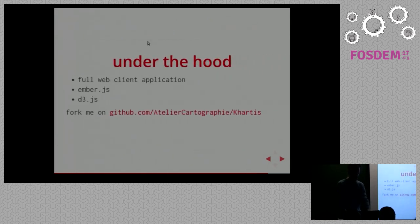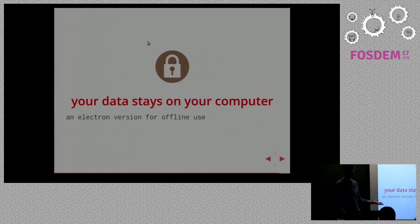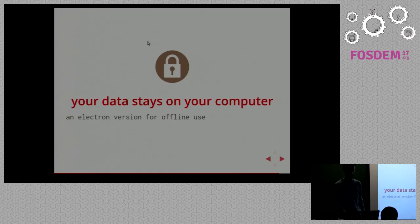Under the hood, we have a full web client application built with Ember.js JavaScript. We use D3 for projections and many different visualization utilities. You can fork it on GitHub of course. Because it's fully client-side, your data stays on your computer — we have no server features. Being full web made it quite easy to provide an Electron version for offline use, which means you can download a desktop application of Cartis and use it on your computer without internet.